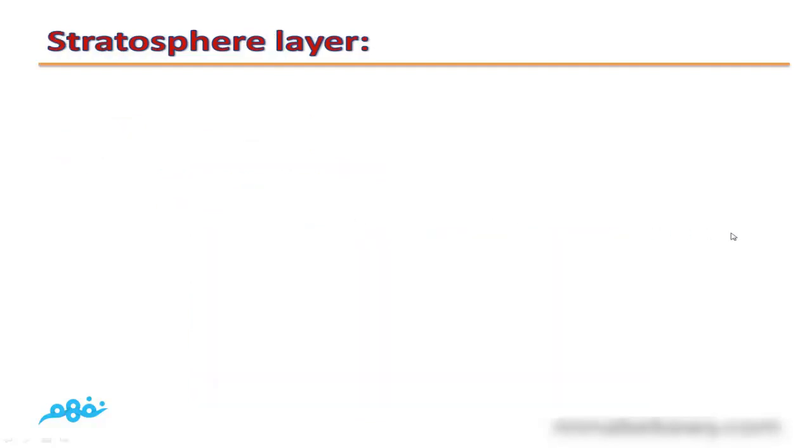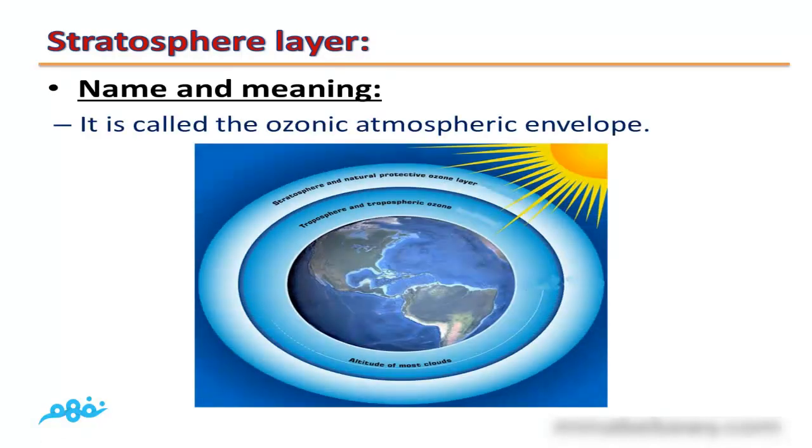The second layer is the stratosphere layer. Stratosphere is also called the ozonic atmospheric envelope because it contains the ozone layer.